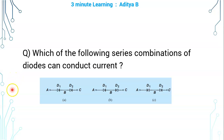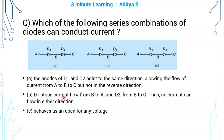Which of the following series combinations of diodes can conduct current? A diode can conduct current when its anode potential is greater than the cathode potential by at least one diode drop.